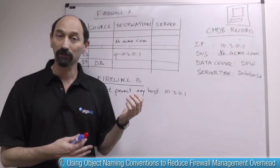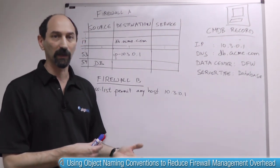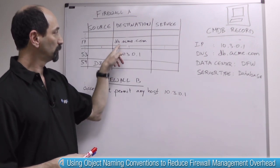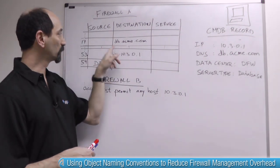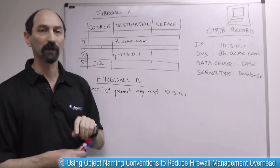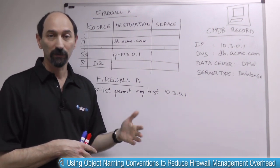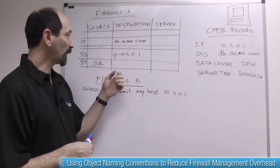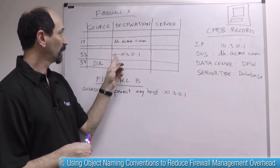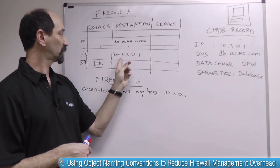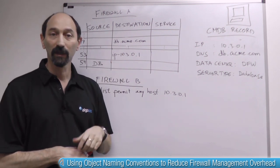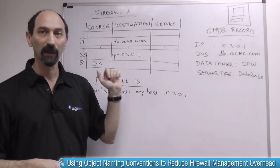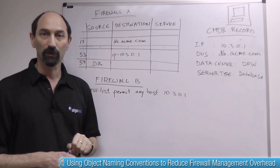It really depends on how the firewalls are managed and what the firewall vendor lets you do. Some firewall vendors let you use the DNS name, so people might write rules that refer to db.acme.com. Other firewall vendors require you to define objects and give them names. An engineer might call that server in a rule using ip- followed by the IP address. Some other engineer might realize it's a database server and just call it 'db' for convenience.